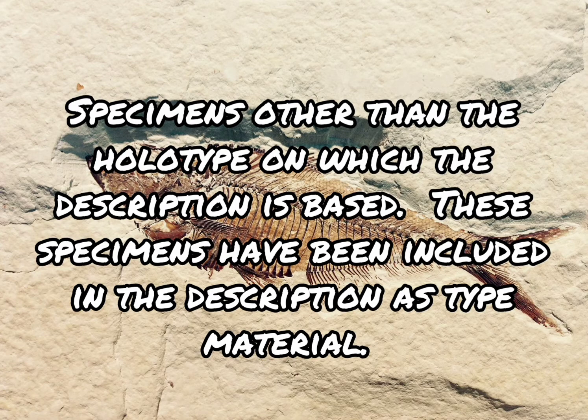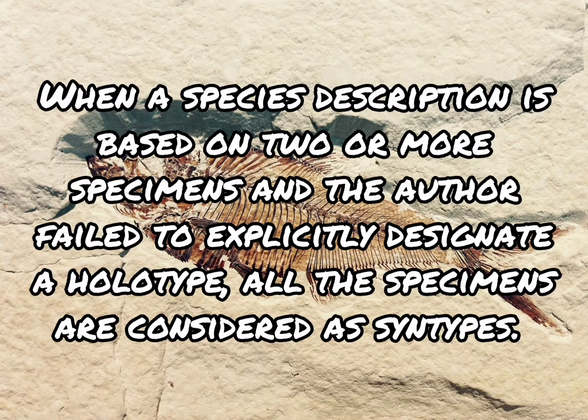Paratype: specimens other than the holotype on which the description is based. These specimens have been included in the description as type material. When a species description is based on two or more specimens and the author failed to explicitly designate a holotype, all the specimens are considered as syntypes.